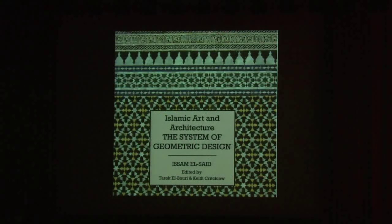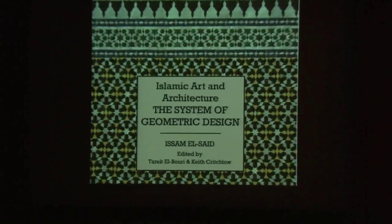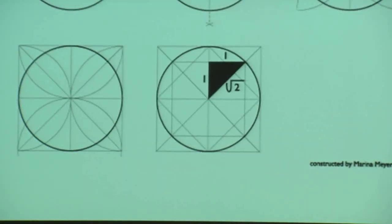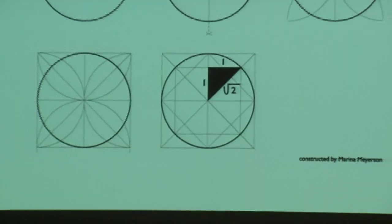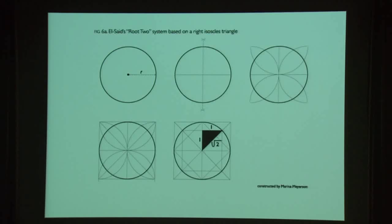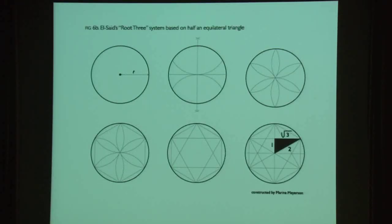These two systems are treated at length by Issam El-Sayed in a book published posthumously, edited by Tariq El-Bouri and Keith Critchlow. El-Sayed labeled them the root-two system, based on a right isosceles triangle — 45, 45, 90 degrees, the basis for all square grids — and the root-three system, based on a 30-60-90 degree triangle, the basis for all triangular, rhombic, and hexagonal grids. All are proportional systems depending on the geometry of any circle.